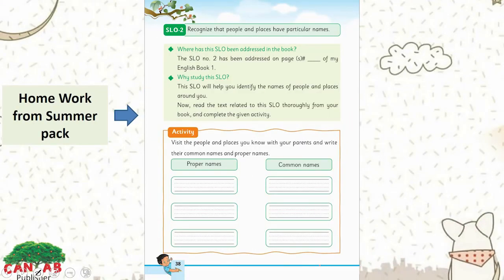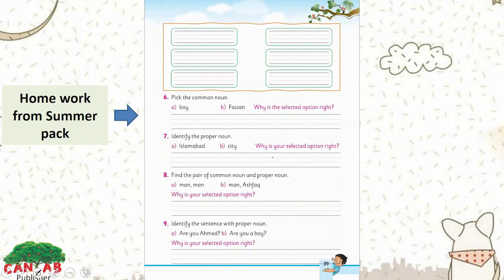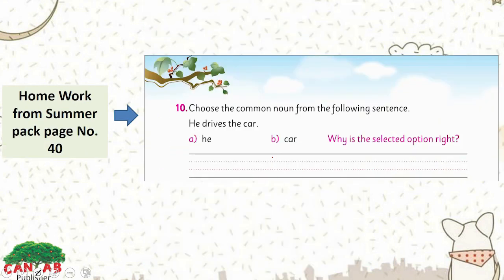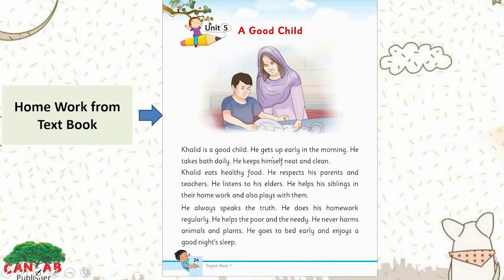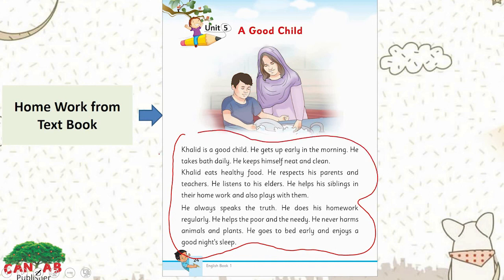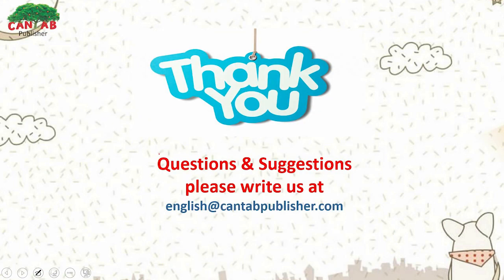This is your homework from the summer pack — visit the people and places you know with your parents and write their common names and proper names. Complete pages 39 and 40. Also from the textbook, identify all the common and proper nouns from the text of Unit 5 — just give it a read and underline all the common and proper nouns. I hope you have enjoyed the lesson. Thank you.